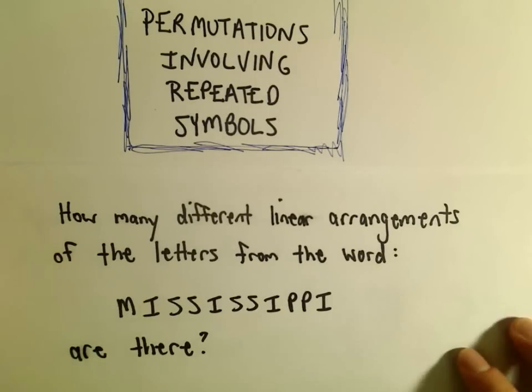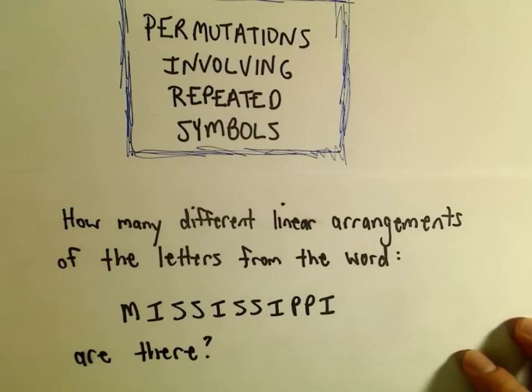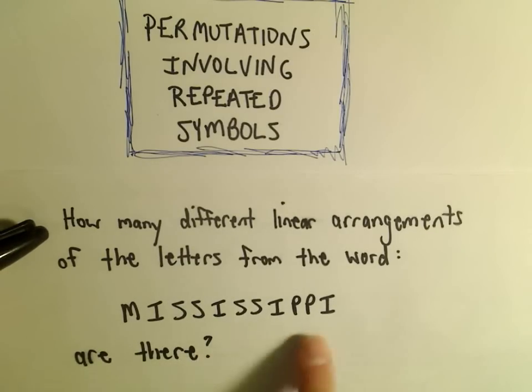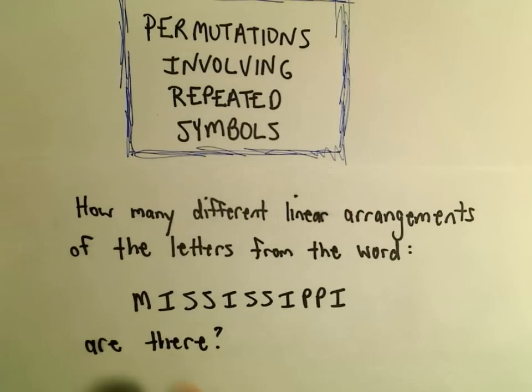All right, in this video I'm going to do an example involving permutations that have repeated symbols. We're going to look at a classic problem: how many different linear arrangements of the letters from the word Mississippi are there?